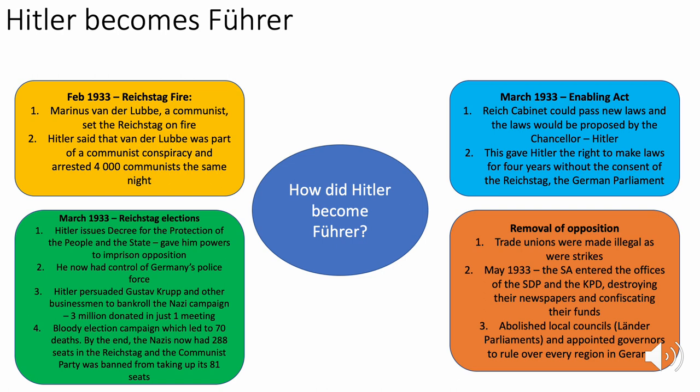The first event was the Reichstag Fire of February 1933, where Dutch communist Marinus van der Lubbe set the Reichstag on fire. Hitler claimed van der Lubbe was part of a communist conspiracy and used this as a pretext to arrest 4,000 communists on the same night.